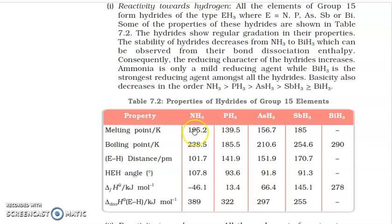You don't need to remember the exact values, just remember the trend. On going from top to bottom in hydrides, the melting point generally increases. But what is the problem with NH3? NH3 has 3 N-H single bonds and one lone pair. Nitrogen's electronegativity is very high, so it can form hydrogen bonds. NH3 molecules form intermolecular hydrogen bonding with each other, which is why its melting point and boiling point are high.